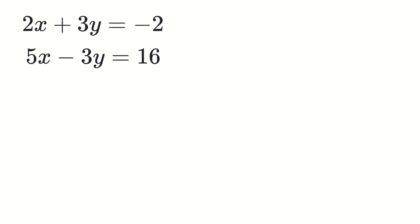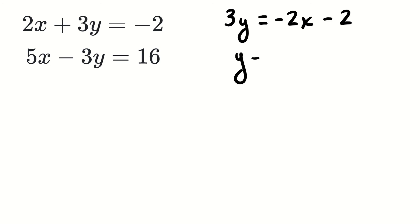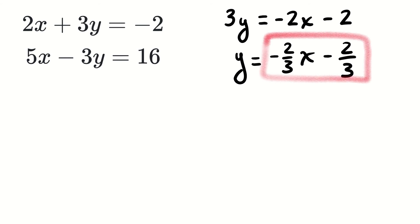According to Jeanette's plan, we begin by solving the top equation for y. I'll subtract 2x from each side, giving 3y equals negative 2x minus 2. Then I divide everything by 3, so y equals negative two-thirds x minus two-thirds. What I have now is an expression, negative two-thirds x minus two-thirds, that equals y.